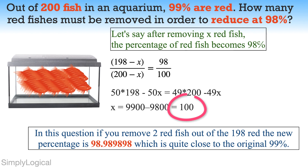So, we have to remove 100 red fish, making the total percentage of red fish 98%. It is quite an unbelievable answer — the difference in percentage is only 1%, but the difference in number is 100.